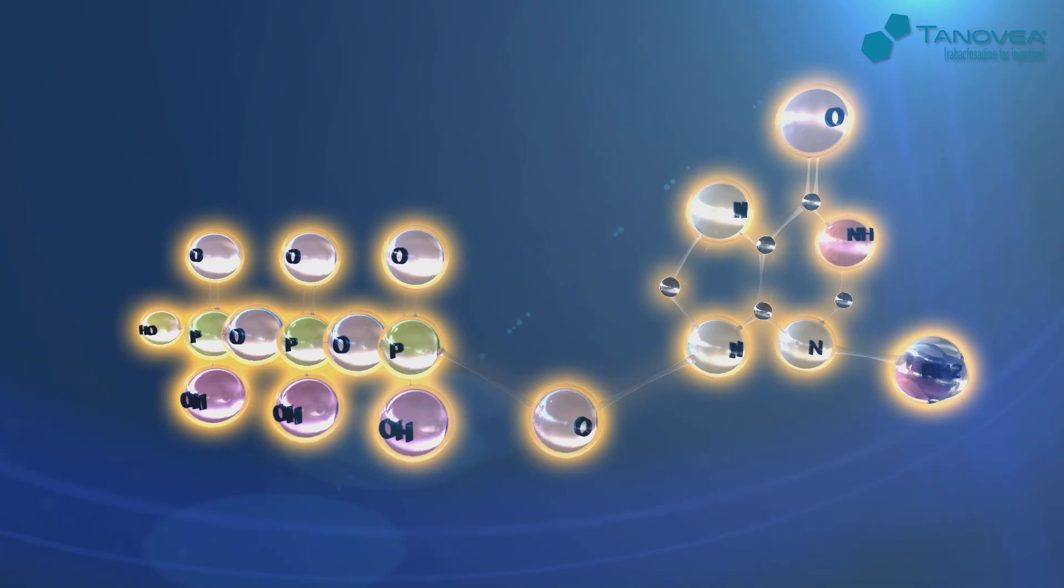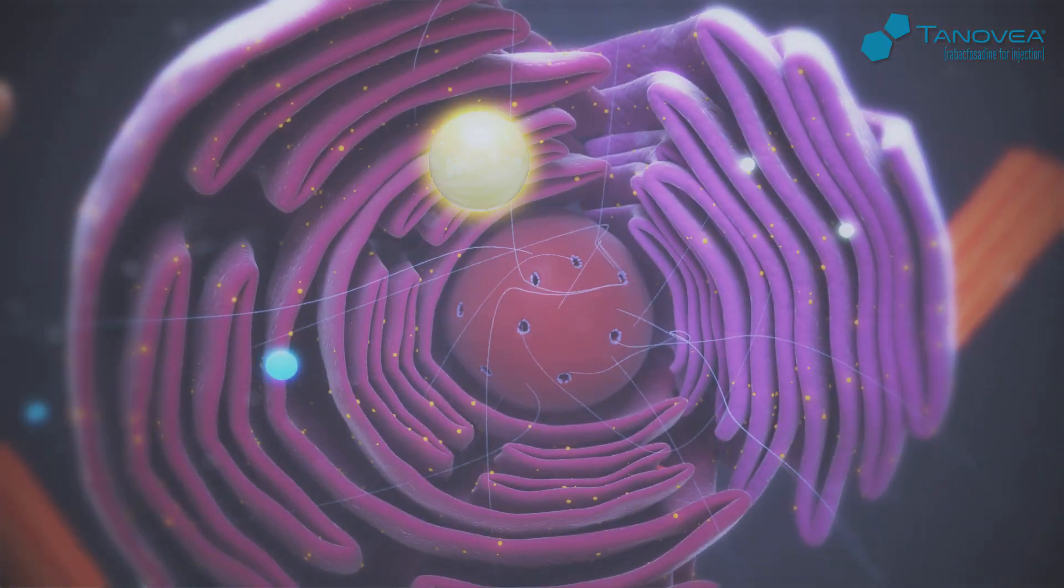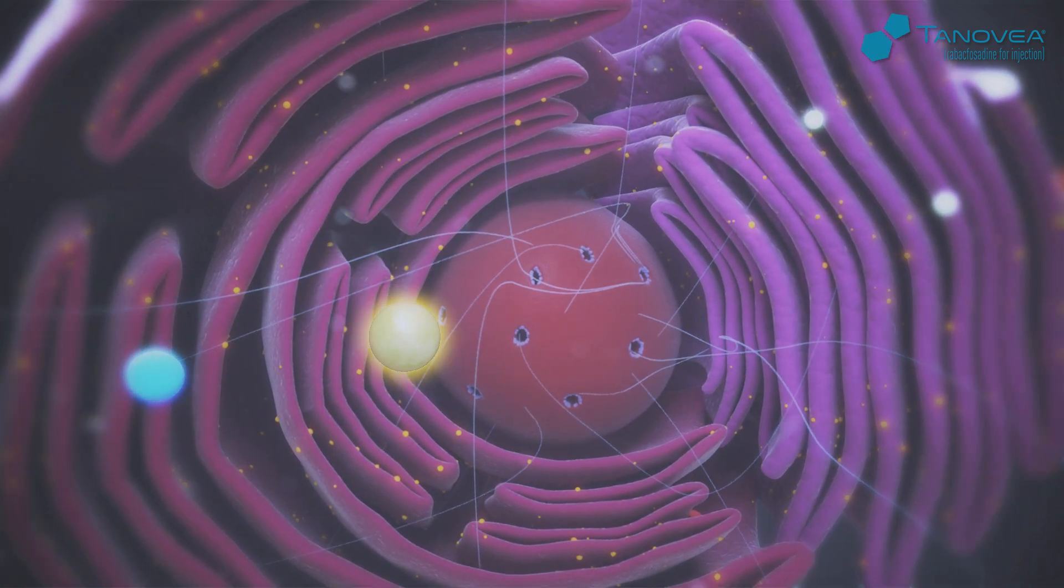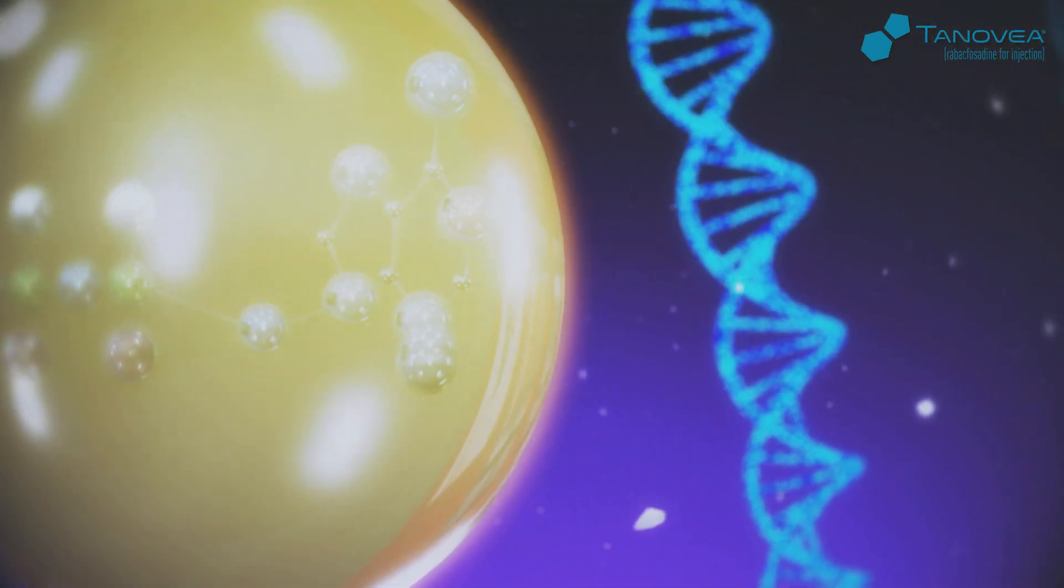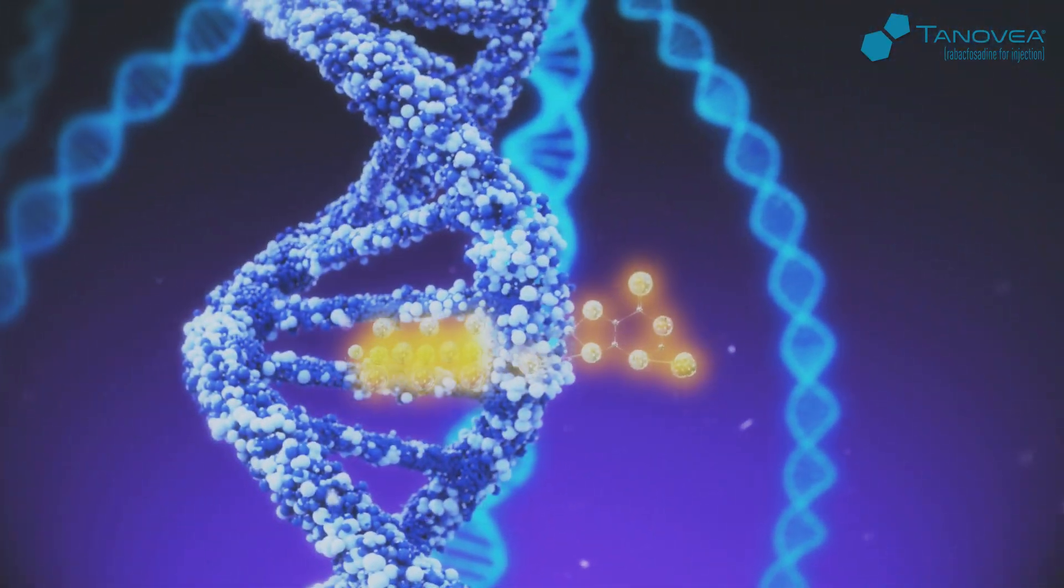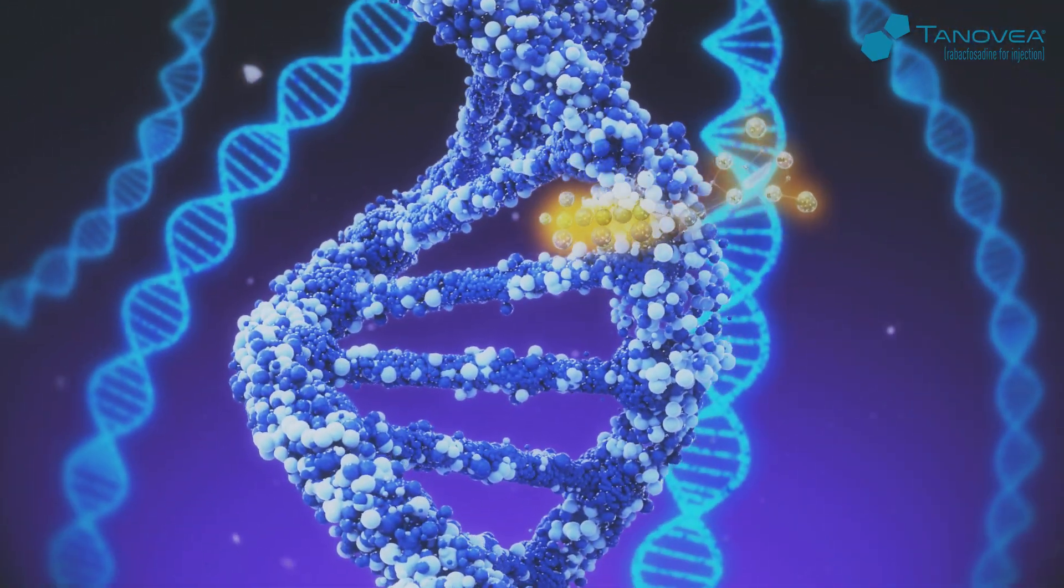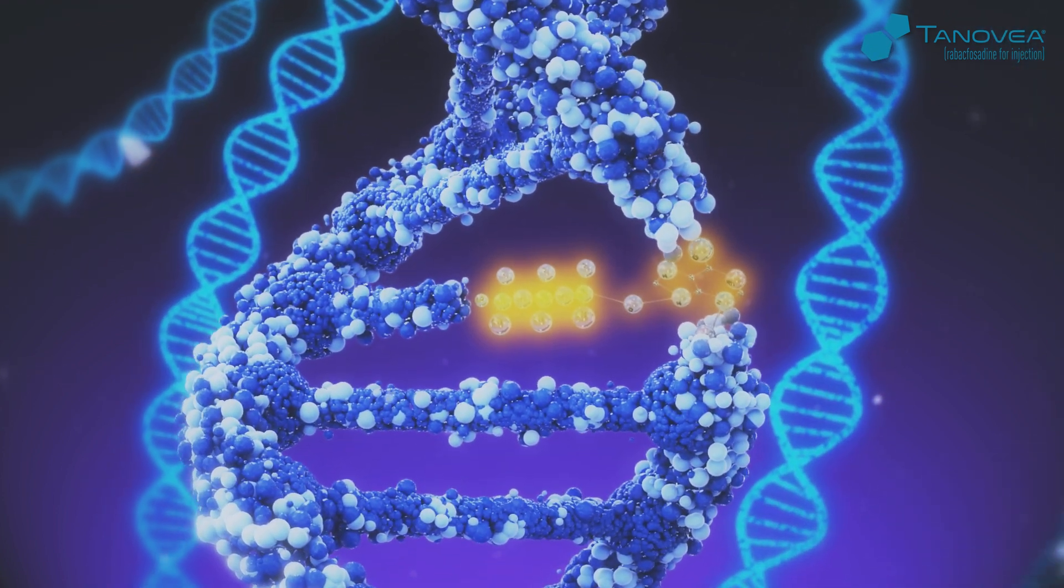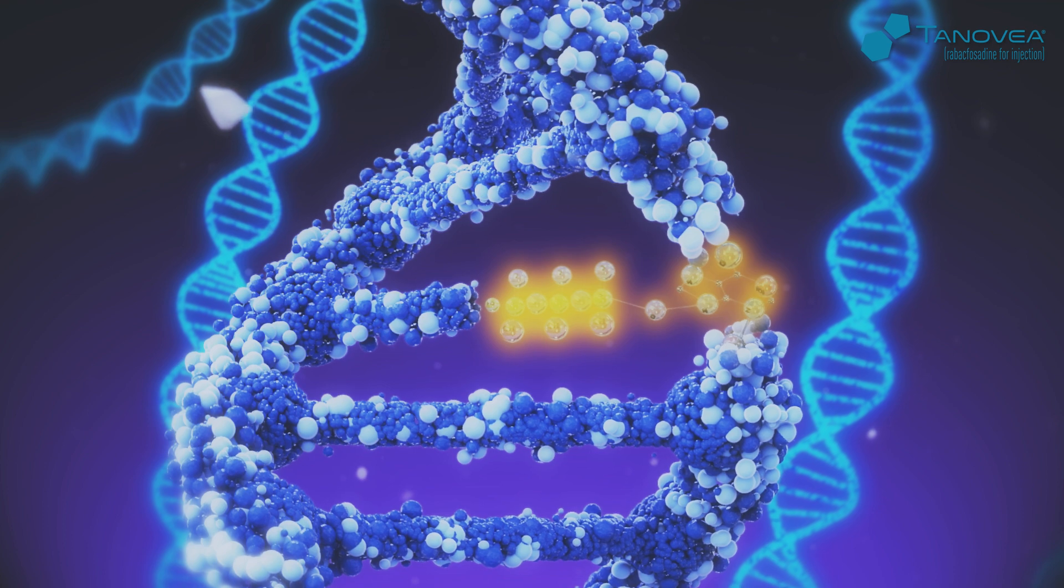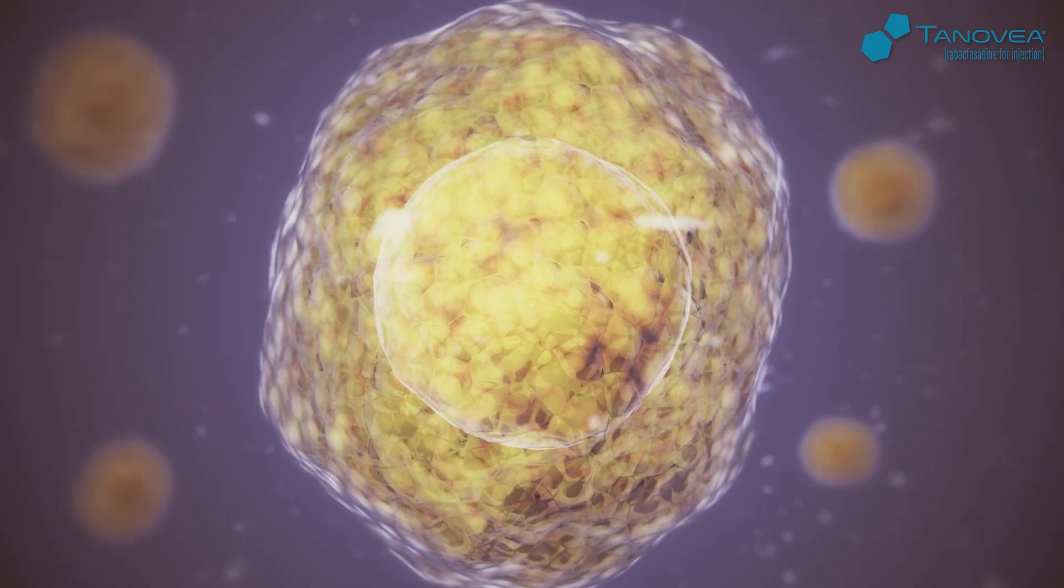PMEG is then phosphorylated to the active metabolite diphosphonate form PMEGPP. The active metabolite enters the cell nucleus and disguises itself as one of the building blocks of DNA, guanine. In doing so, the activated form of Tanovia interferes with DNA synthesis leading to apoptosis or cell death.